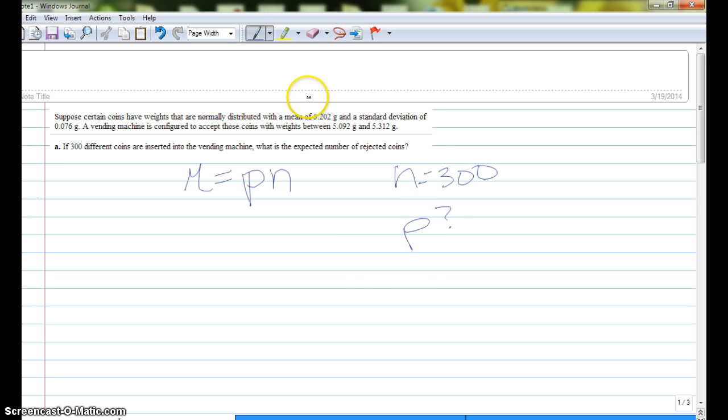Now, to find P, we have to use the information in the beginning of the problem. It tells us it's a normal distribution, that they're normally distributed. And that's what's going to help us.